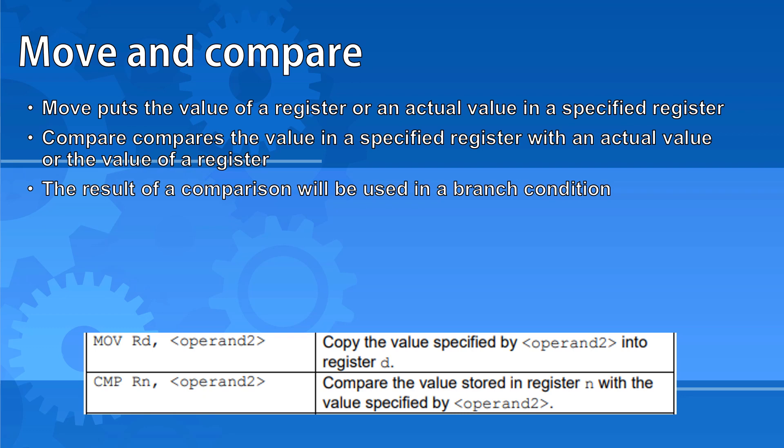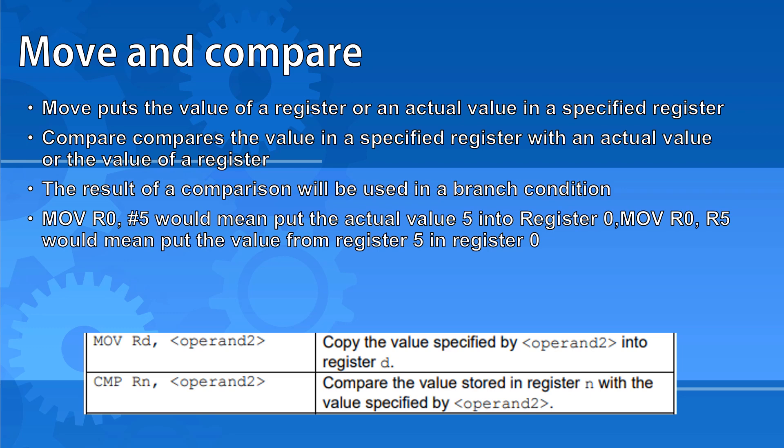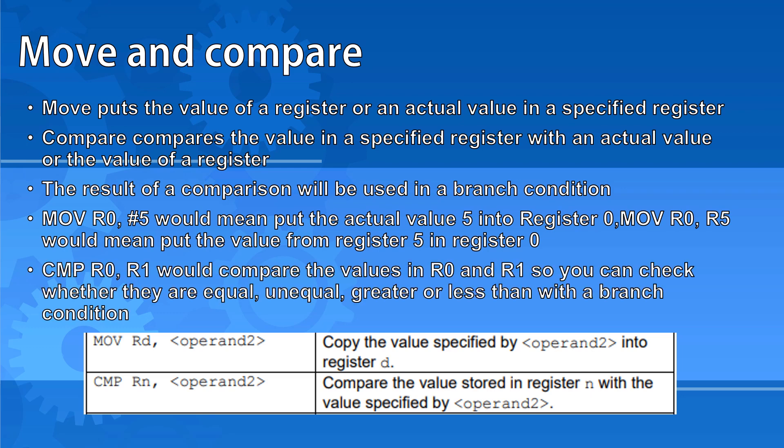So the command MOV R0, #5 would mean put the actual value 5 in register 0. MOV R0, R5 would mean put the value from register 5 in register 0. It should be noted, even if it's noted as #5, the actual value stored would be in binary, so if it was 8 bit storage, it would be 00000101. The command CMP R0, R1 would compare the values in R0 and R1, so that you can check whether R0 is equal to R1, unequal with R1, greater than R1, or less than R1, so that we can use that in a branch condition. We're going to have a look at these now.